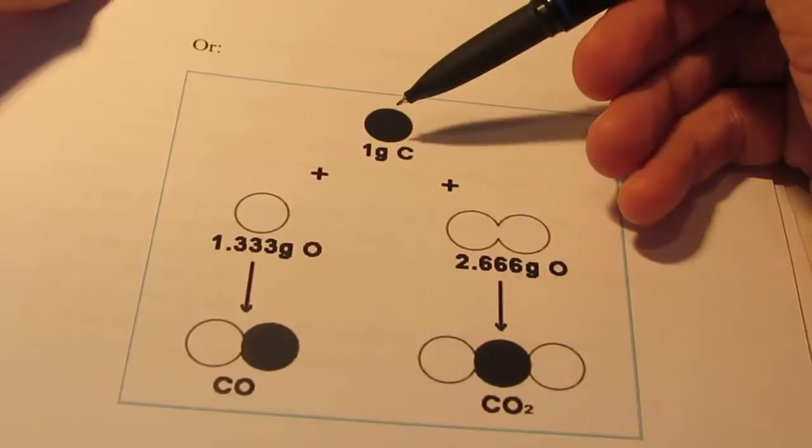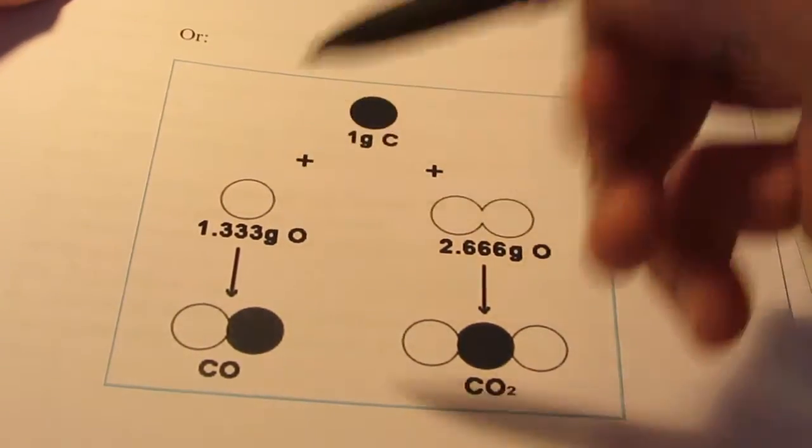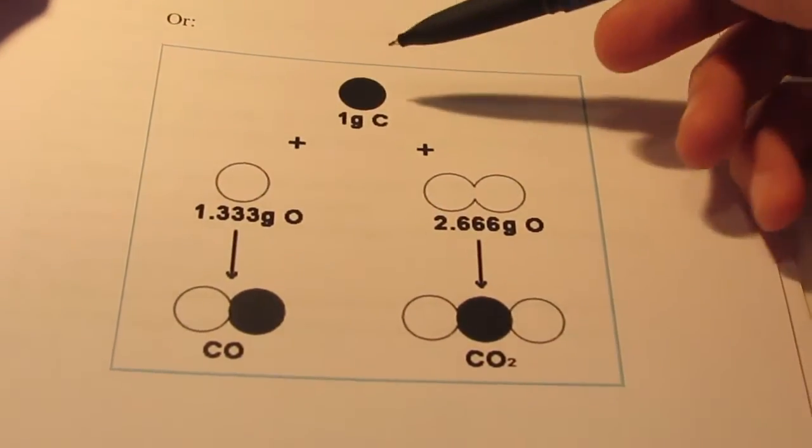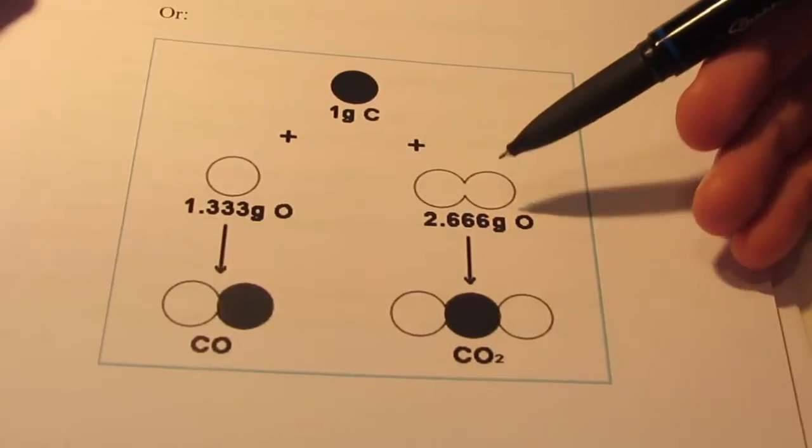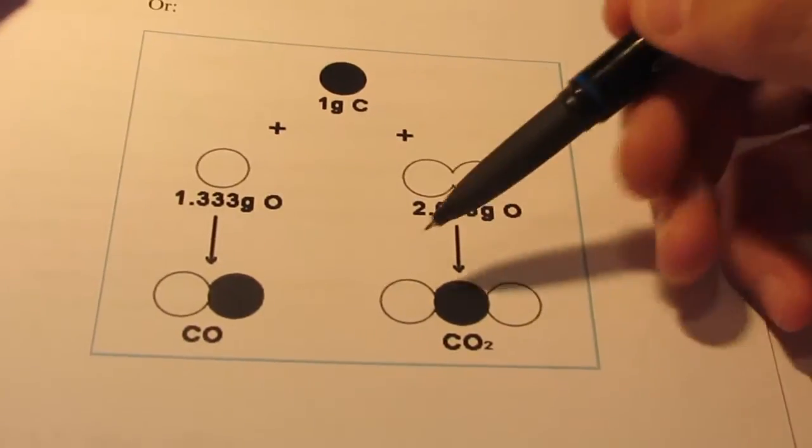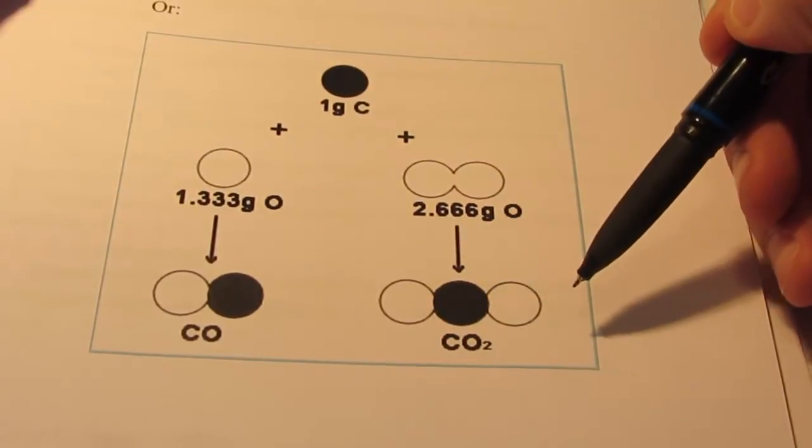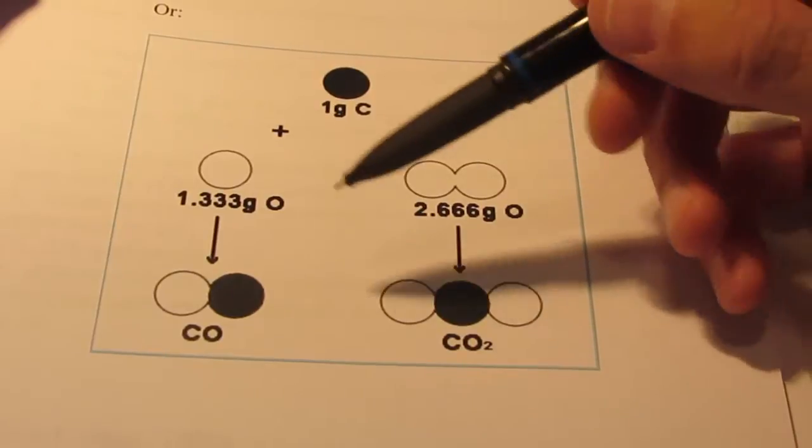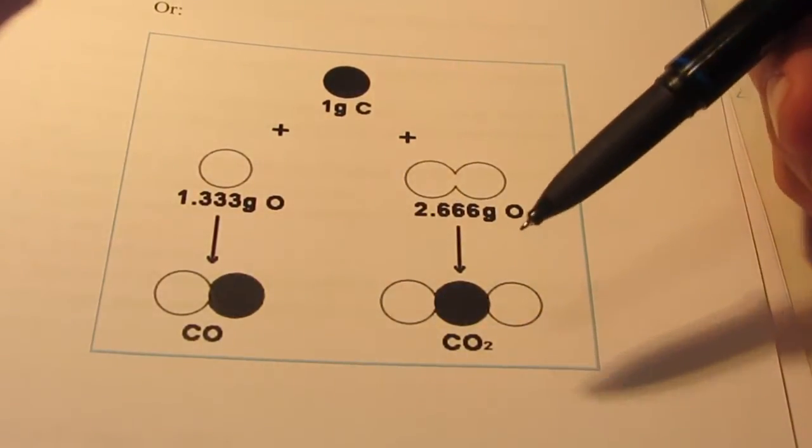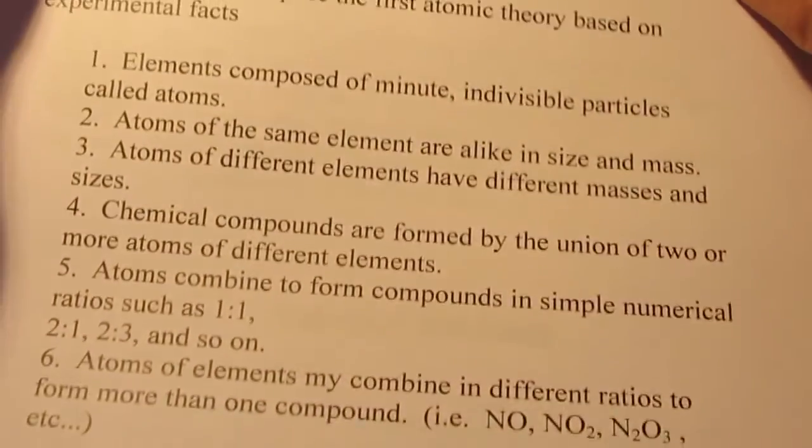I have another example for you. If I were to take one gram of carbon, I can combine it with 1.333 grams of oxygen and form a compound, carbon monoxide. But I could also combine it with exactly twice the amount of oxygen, 2.666, and end up with CO2, so twice as much oxygen in that formula. Once again, the atoms are coming together in simple, whole number ratios. So atoms, we believe, cannot be divided into smaller particles.